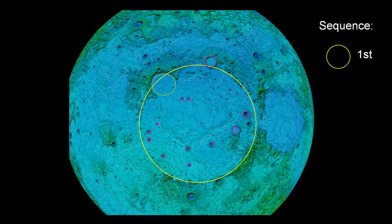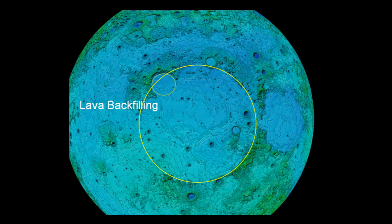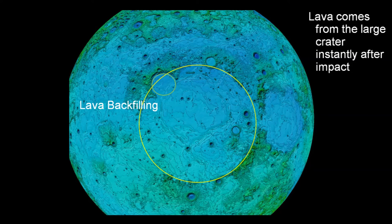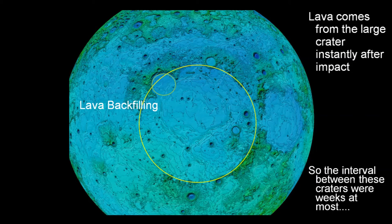The green one must be second because it is filled with basalt while the purple aren't. So this lava backfilling of the green crater means the green crater must have been within weeks after the yellow one. If you see my presentation about heat and the Genesis flood you can see that the lava could not have been liquid for years. Thus the interval of these craters must have been very short.